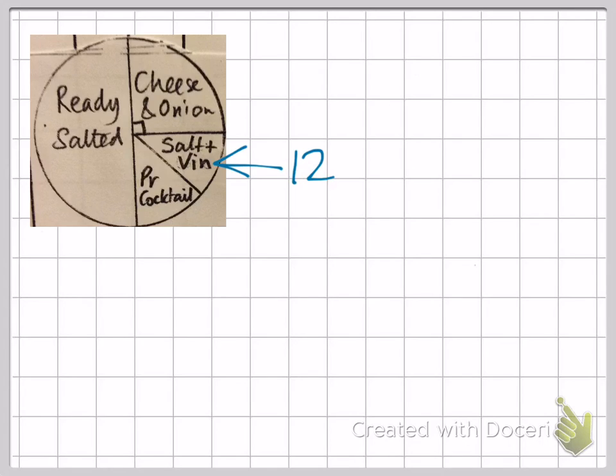We know that salt and vinegar and prawn cocktail are the same, so equally we would have 12 in that section.